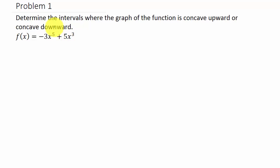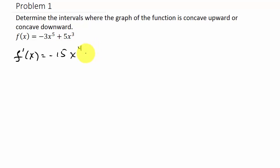We want to find the intervals where the graph of the function is concave upward or concave downward, and we're also going to determine the inflection points — I'll explain inflection points when we get to that part. First thing we need to do is find the second derivative. So f prime of x is equal to negative 15x to the fourth plus 15x squared.